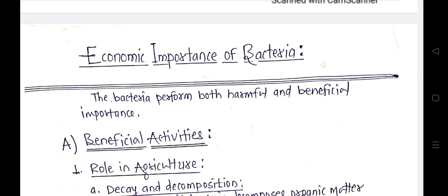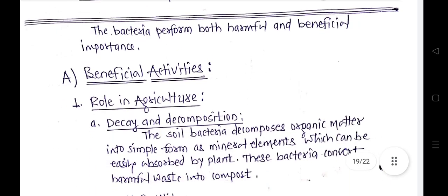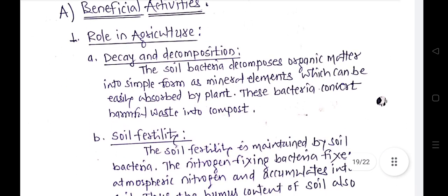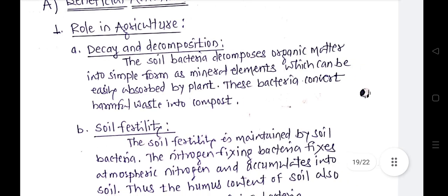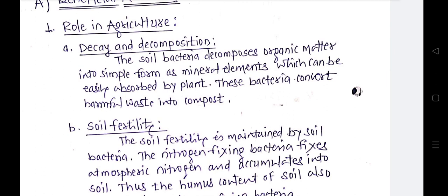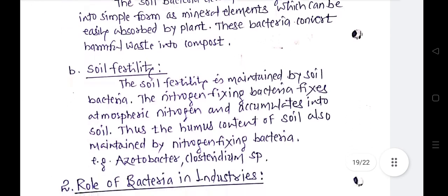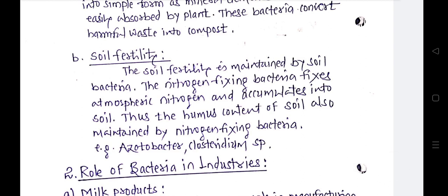First, the beneficial activities of bacteria — the role of bacteria in agriculture. Soil bacteria decomposes the organic matter into simple mineral elements which can be easily absorbed by plants, increasing the humic acid. Bacteria also convert harmful waste into compost, which is very important for the growth of crop plants. Soil fertility is maintained by bacteria.